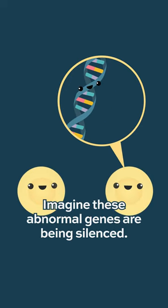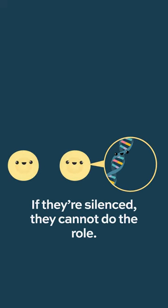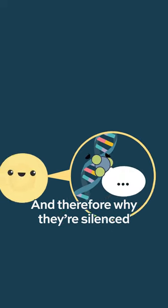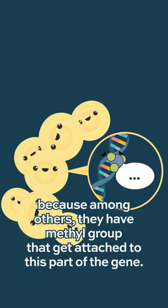Imagine these abnormal genes are being silenced. If they're silenced, they cannot do their role. And therefore, they're silenced because, among others, they have a methyl group that gets attached to this part of the gene.